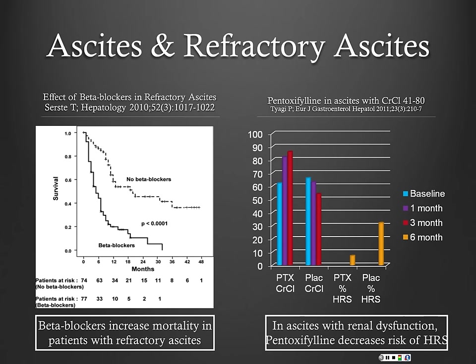Not in well-compensated cirrhosis with minimal ascites, but patients with diuretic-resistant or intractable ascites — this 2010 study showed a significant decrease in overall survival in patients on non-selective beta blockers. Another study published recently corroborated that and also showed an increased risk in patients who have SBP even without refractory ascites. So if patients have refractory ascites or have had SBP, think about stopping their non-selective beta blockers.